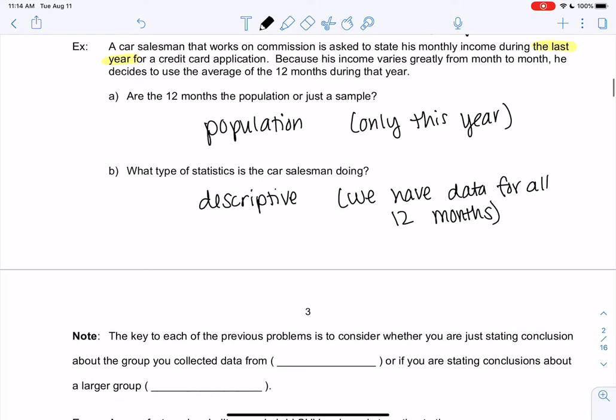So the key to each of these problems is to consider whether you're stating a conclusion about the group you collected data from. If you're only describing the sample and it happens to be the entire population, so like the 12 months, right? That was the entire population. Even though it was a sample, the sample represented the whole population.